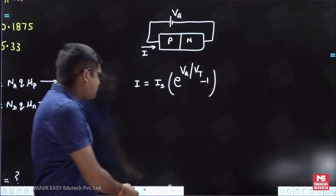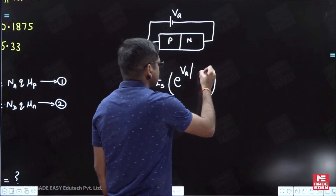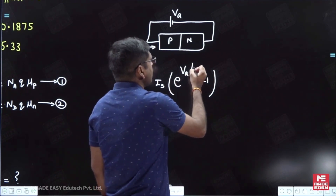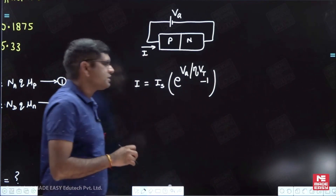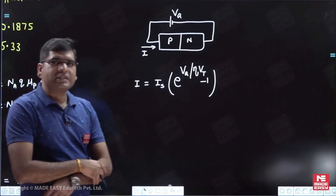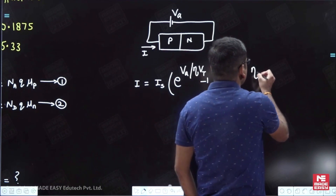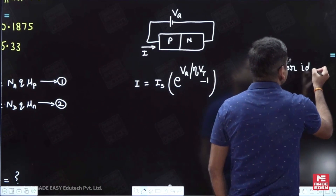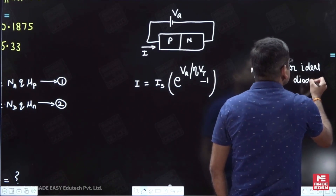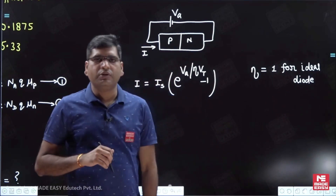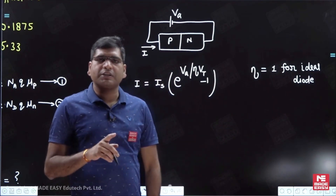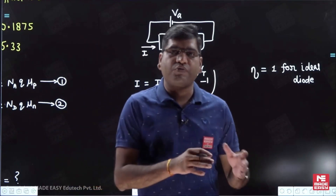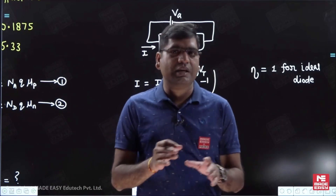Generally, this equation is written as I = I_s times (e to the power Va/(eta * Vt) minus 1), where eta is known as the ideality factor. Eta equals 1 for an ideal diode. Although eta is written as 1 for the germanium diode and eta equals 2 for the silicon diode. But if nothing is mentioned, we consider it an ideal diode with eta equal to 1. In this question, nothing specific is mentioned initially.